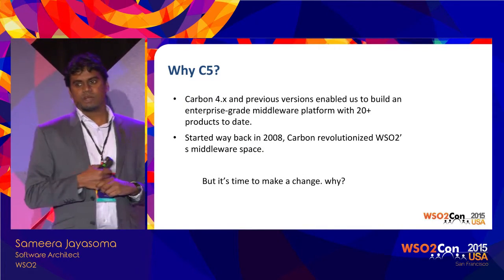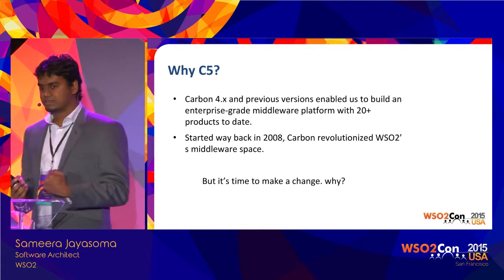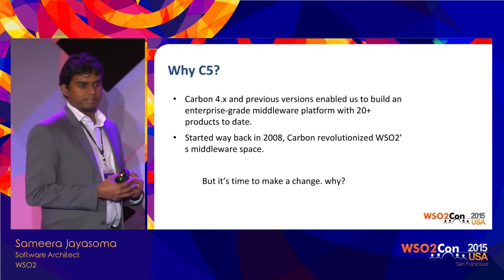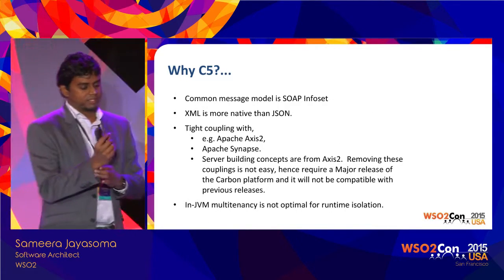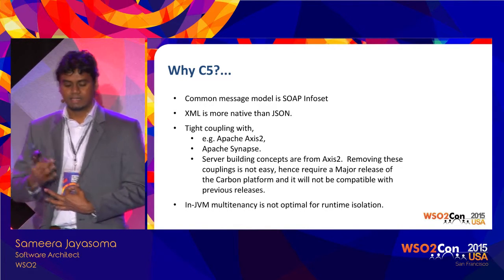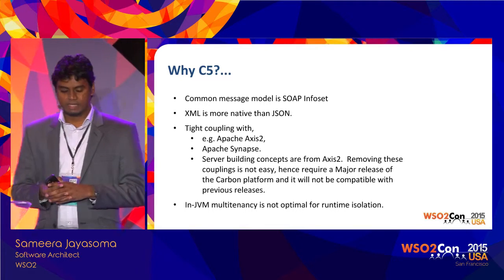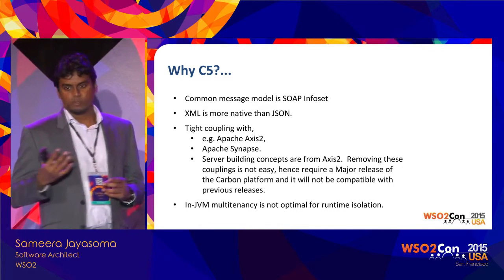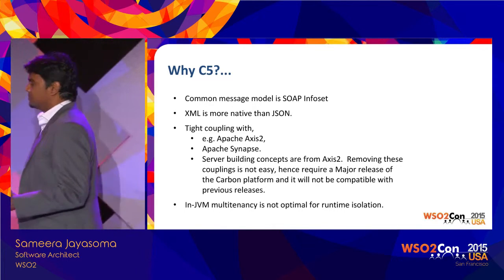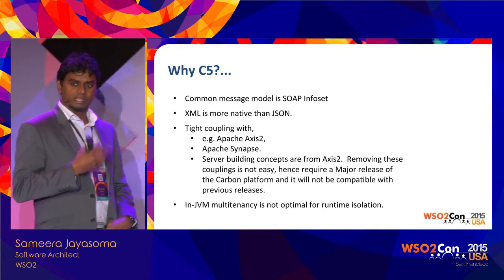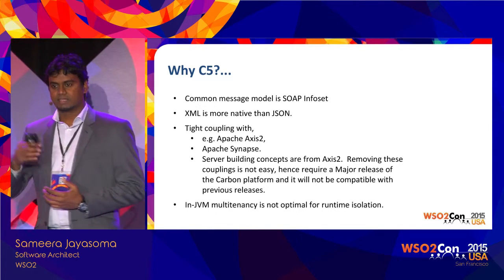Why do we need Carbon 5? We have a very good, composable middleware platform with 20-plus products today. But why are we trying to move to a new platform? Our existing platform started with an XML mindset — a SOA architecture, mostly web services and SOAP. The common message model is SOAP InfoSet. If you look at Apache Axis2 and Apache Synapse, the common message model is SOAP InfoSet, and it natively supports XML. We added JSON very recently because the world is moving towards REST and JSON, so JSON is not a first-class citizen.